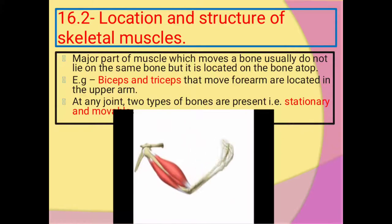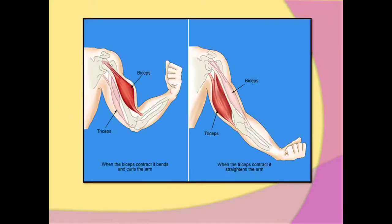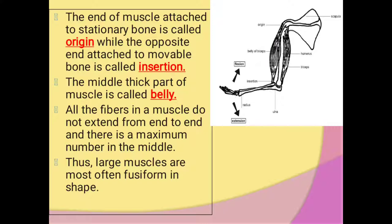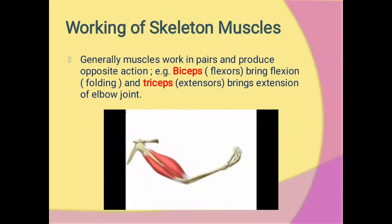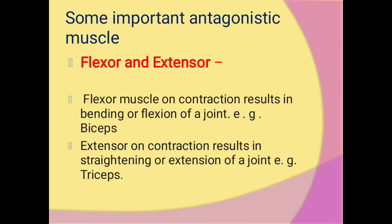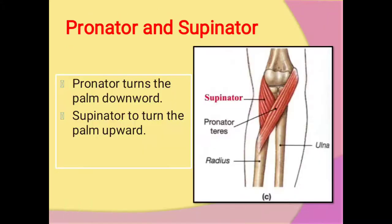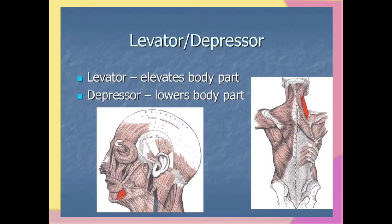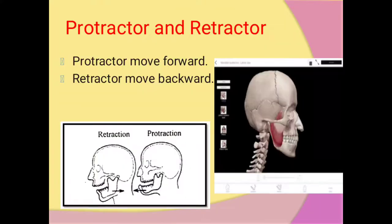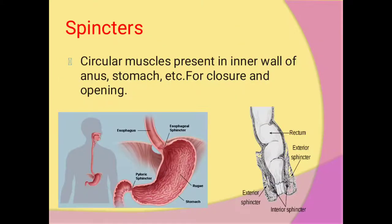We have seen related to this chapter: the location and structure of skeletal muscles — origin, insertion, and belly. Then we have seen the working of skeletal muscles and examples of antagonistic muscles: flexor, extensor, abductor, adductor, pronator, supinator, levator, depressor, protractor, retractor, and sphincters. All these topics we have already seen in the last lecture.